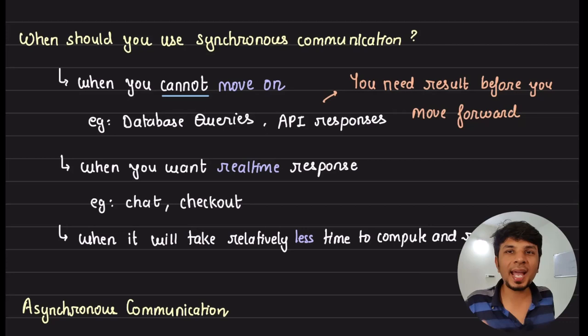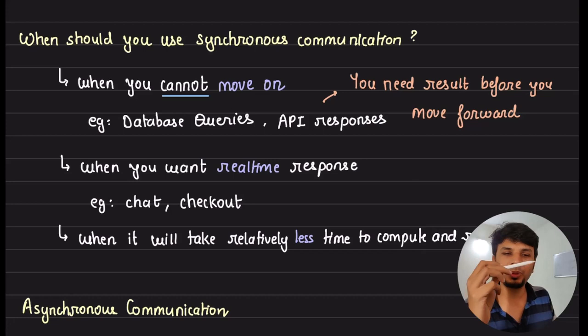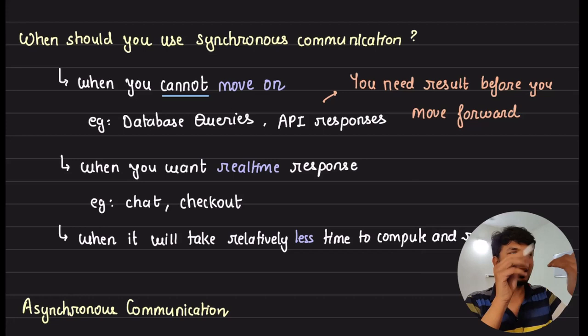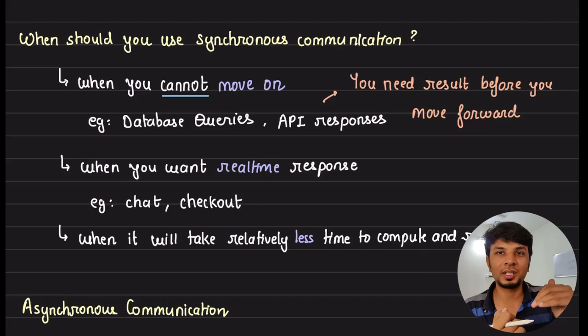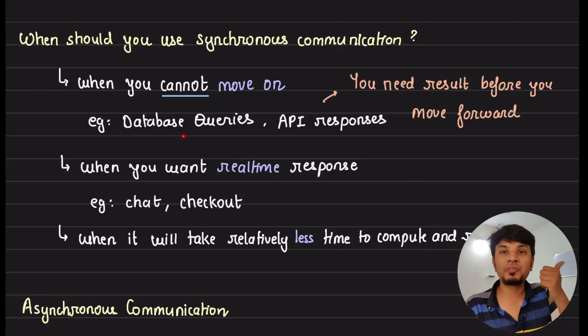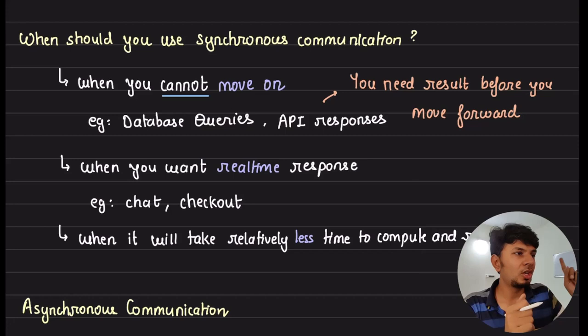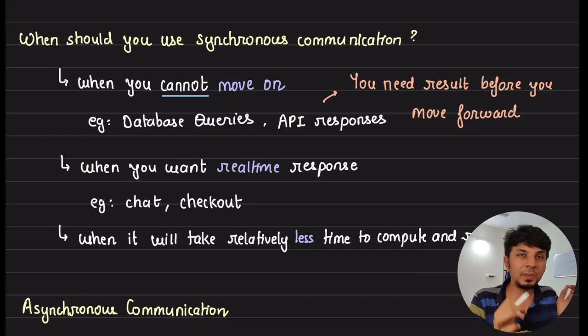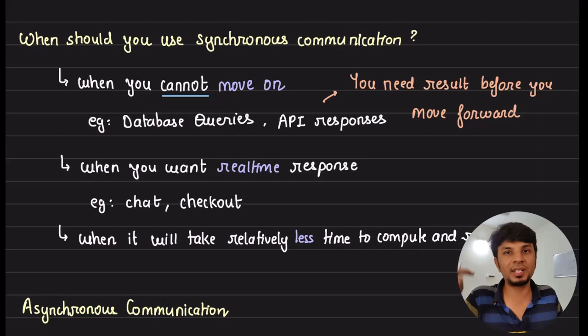When should we actually use synchronous communication? The key reason is when you cannot move on without a response — when the request you made and the response you will get are both needed to proceed further. For example, firing a database query: unless you get a response, you won't move forward. Similarly, when a user hits like on a post, the user's API request to the reaction service must wait for a response before moving forward.